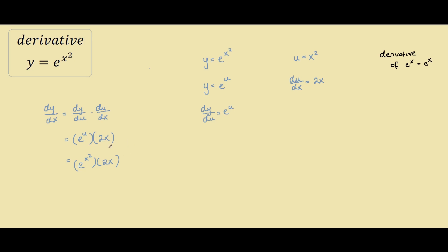The easiest way to find the derivative of any e function with the chain rule is to just find the derivative of the index. In this case our index is x squared. The derivative of an e function will always be the derivative of the inner function times the function again. Our inner function was x squared, so our derivative is 2x times the function.